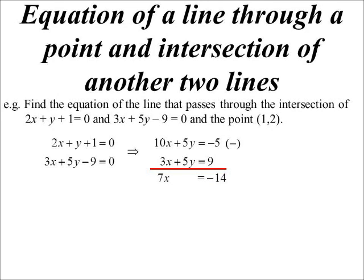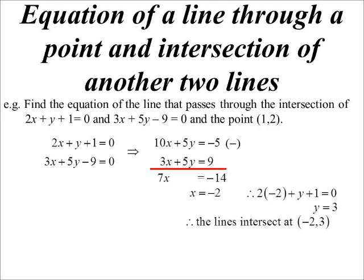And we get 7x minus 14, x is negative 2, sub back in, and I've got my y coordinate. And so I now know the other point that it goes through is minus 2, 3.